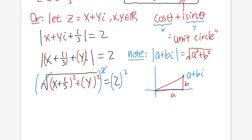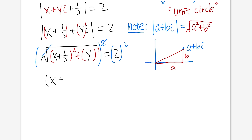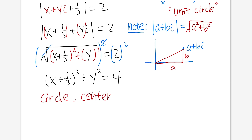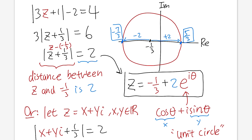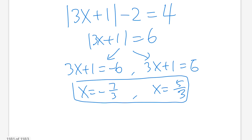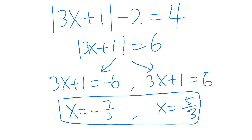Setting that equal to 2 and squaring both sides gives (x + 1/3)² + y² = 4. We can recognize this easily: it's the equation of a circle with center (-1/3, 0) — remember it's x minus h, so h = -1/3 — and radius equal to the square root of 4, which is 2. This is exactly the circle we had before. At the end of the day, sometimes it's just easier to do things by hand to keep your life simple.